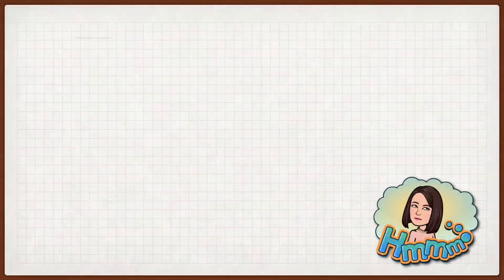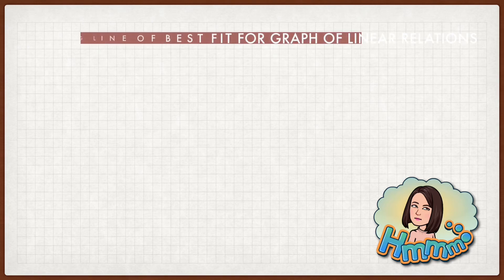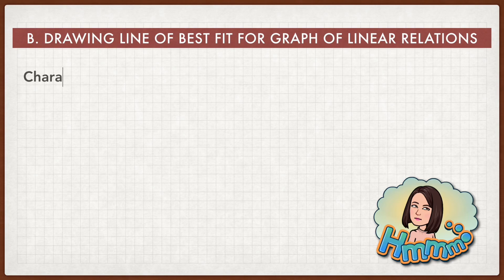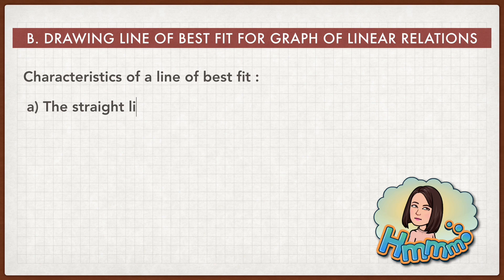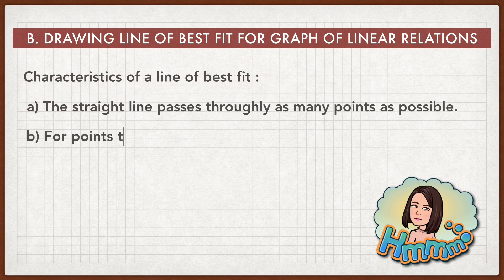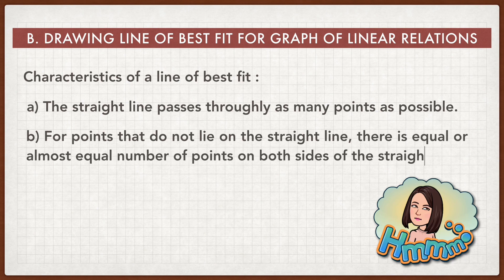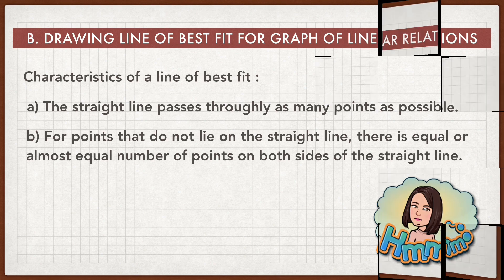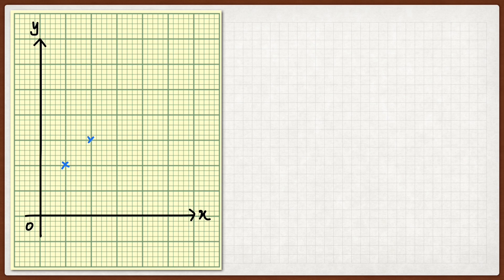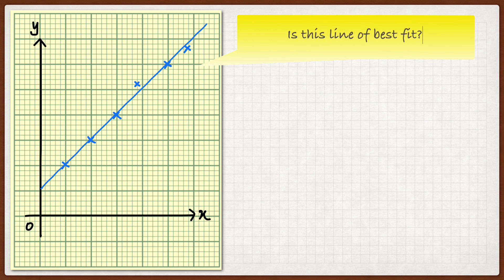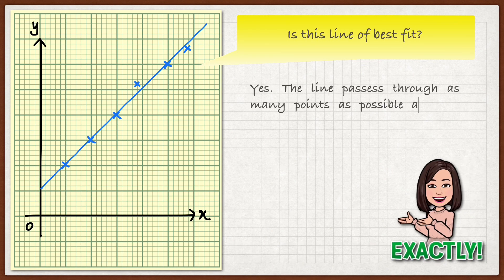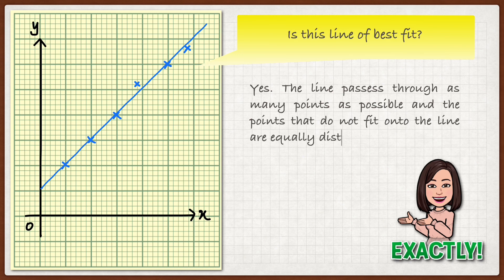Let's proceed to the next learning standard, which is drawing a line of best fit for a graph of linear relations. The characteristics of a line of best fit: the straight line passes through as many points as possible. For points that do not lie on the straight line, there are equal or almost equal numbers of points on both sides of the straight line. Please look at the graph — is this a line of best fit? Yes, the line passes through as many points as possible, and the points that do not fit onto the line are equally distributed on both sides.